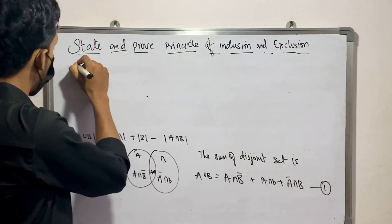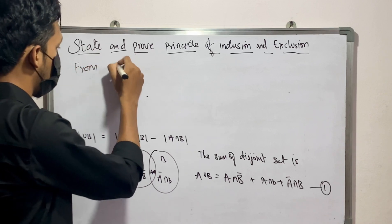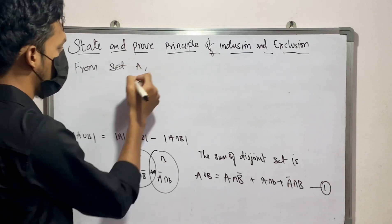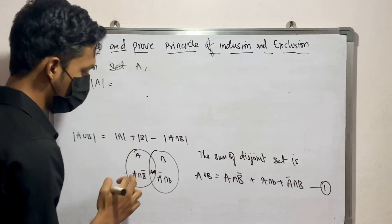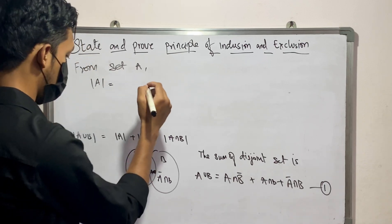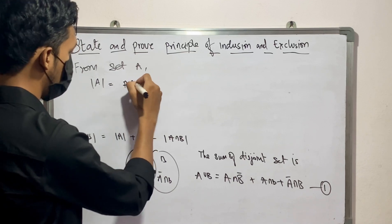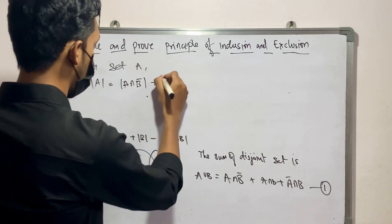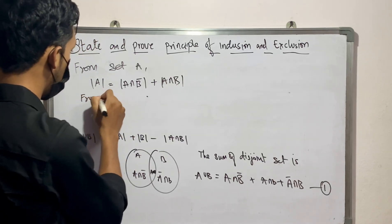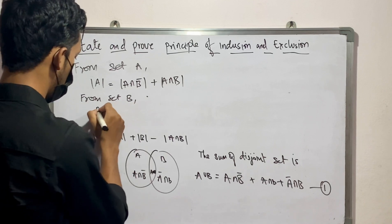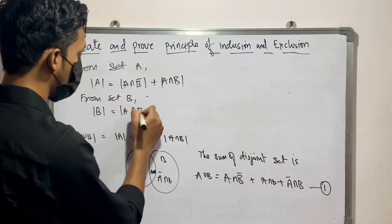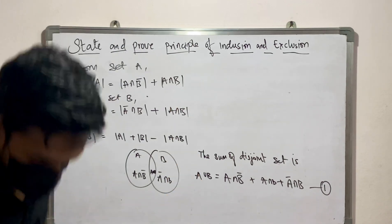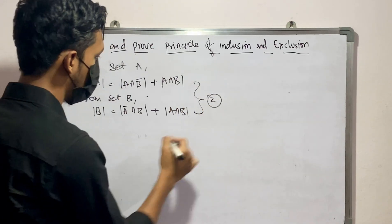From this equation, from set A: mod A equals mod(A intersection B') plus mod(A intersection B). And from set B: mod B equals mod(A' intersection B) plus mod(A intersection B). These give us equations one and two.